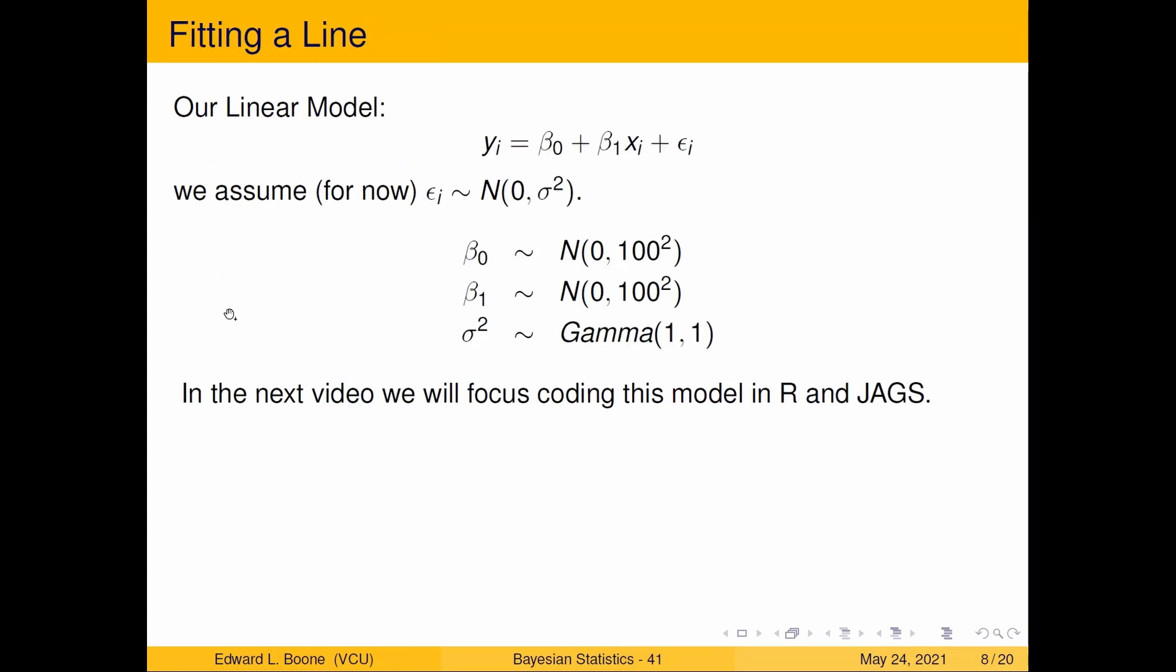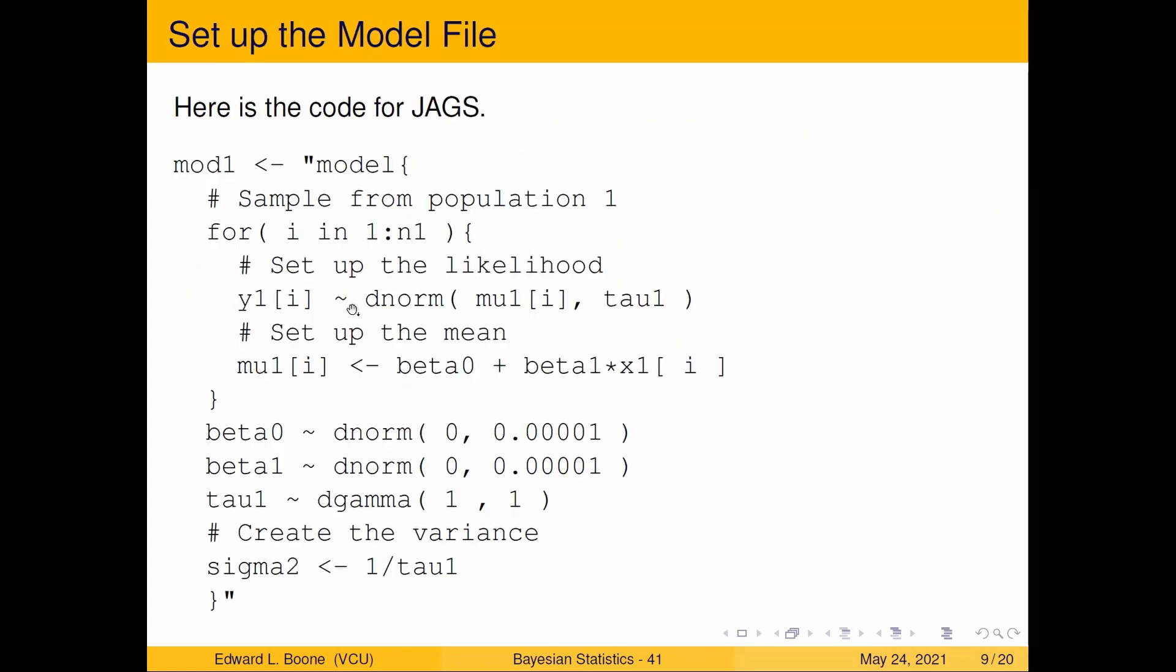Here's a reminder of our model and here it is coded in JAGS. What we're going to do is we're going to run through i is one to n one, that's how many observations we have. We're going to look at y i is distributed as a normal distribution with a mean and the mean is going to vary by each individual observation, and it's going to have a precision tau one. Remember JAGS uses precision instead of variance.